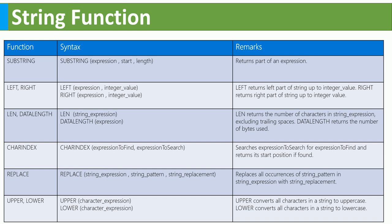LEN or DATALENGTH is used to calculate how many characters are in your column output. CHARINDEX is used to search for a value inside your data. REPLACE is used when you want to replace your output with some other value — for example, if you have a name 'Mark' and you want to change it to 'Johan', you can use REPLACE.